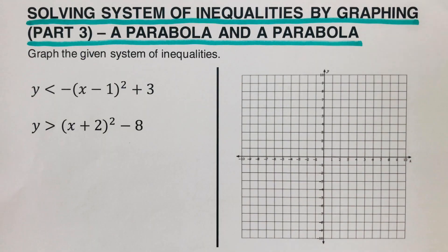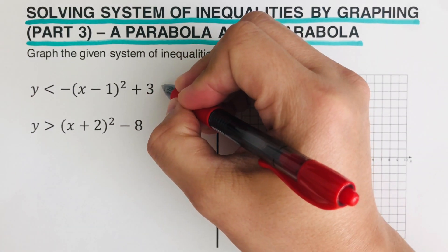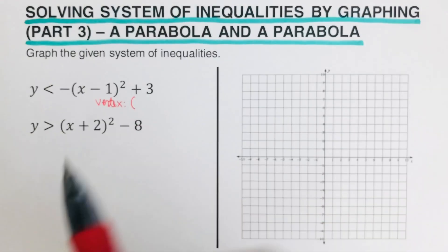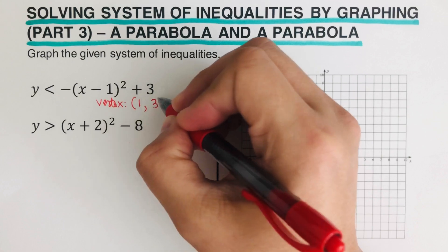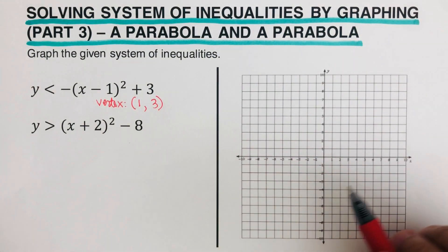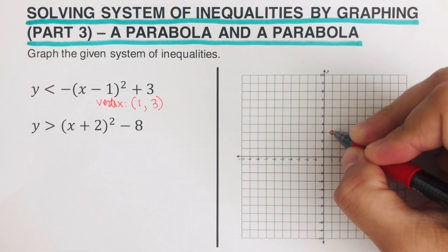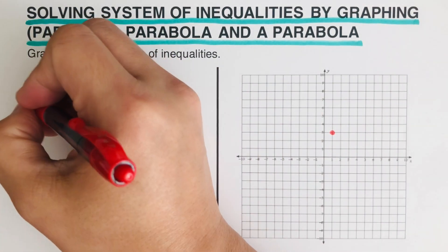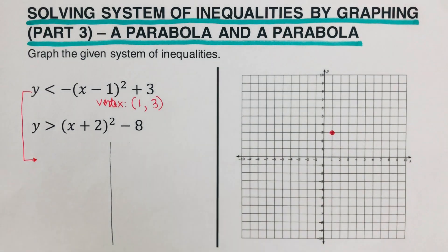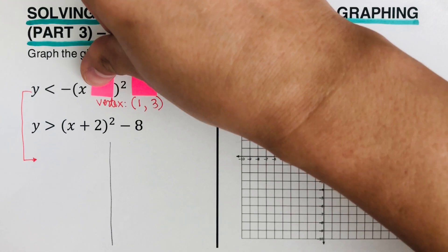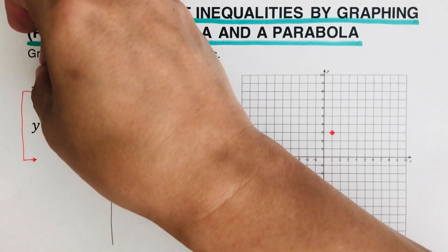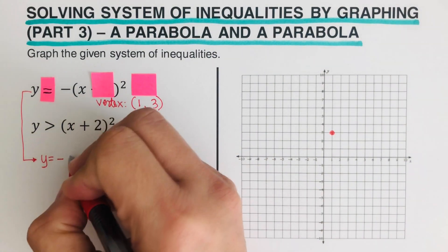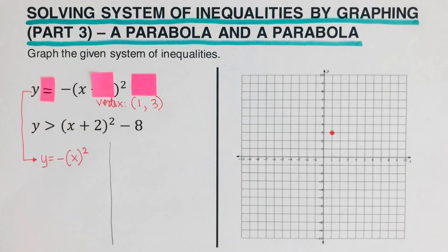We have two parabolas here, so these are both quadratic inequalities. First, we determine the vertex. The vertex is always switch and keep, so that would be positive one and positive three. So our vertex for the first one is at (1, 3). Then we determine the rest of the dots. We cover the H and the K, and change the inequality to an equal sign. The leftover equation we're going to use is y equals negative x squared.